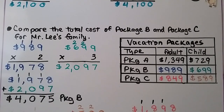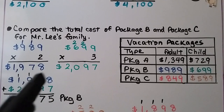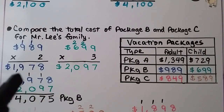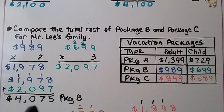For the total cost of package B, we add $1,978 and $2,097. 8 plus 7 is 15 — regroup the 1, put the 5 down. 9 plus 7 plus 1: a friendly pair of 9 and 1 makes 10, and 7 more is 17 — put the 1 up and the 7 down. 9 plus 0 plus 1 is 10 — regroup the 1, put the 0 down. 1 plus 2 plus 1 is 4. We have $4,075 for package B for Mr. Lee's family.